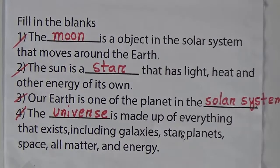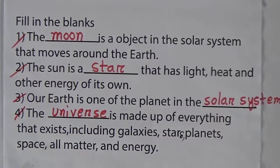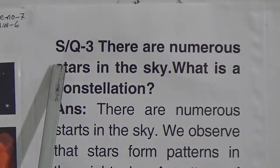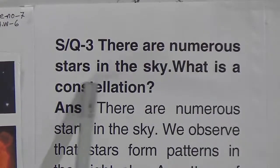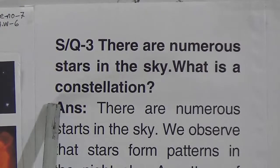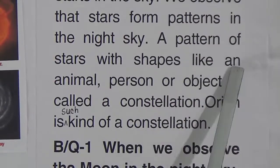Now we will discuss short question number 3. We have already discussed short questions 1 and 2 in our previous class. The question is: there are numerous stars in the sky — what is a constellation? The answer: there are numerous stars in the sky. We observe that stars form patterns in the night sky. A pattern of stars with shapes like an animal, person, or object is called a constellation. Orion is such a kind of constellation.